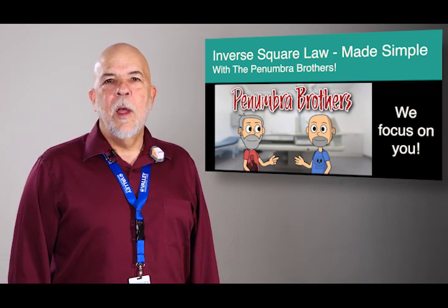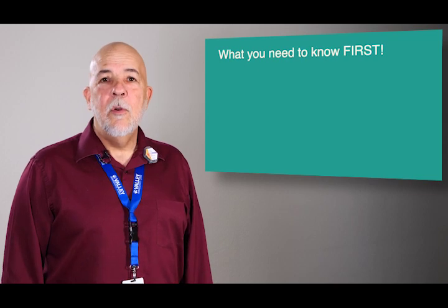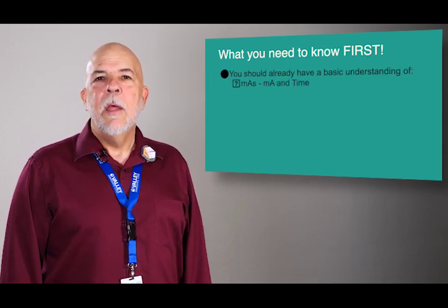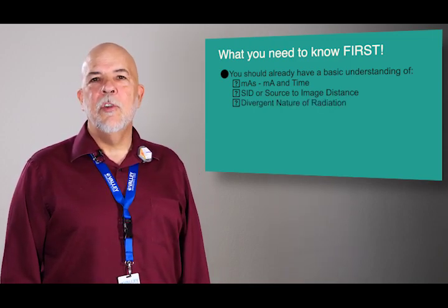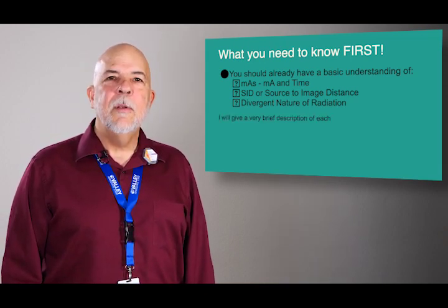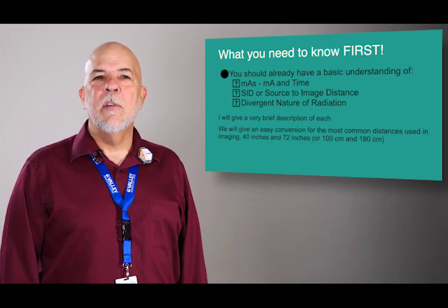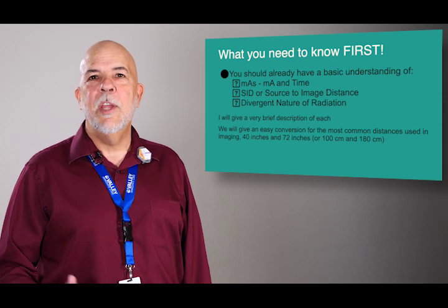So with the Inverse Square Law, there's a few things you need to make sure and be aware of first. You need to be very comfortable with mAs or MA in time, SID or source to image distance, and the divergent nature of radiation. So I'll give a brief description of each one of those, and also an easy conversion from 40 to 72 inches, which is our most common distance changes.